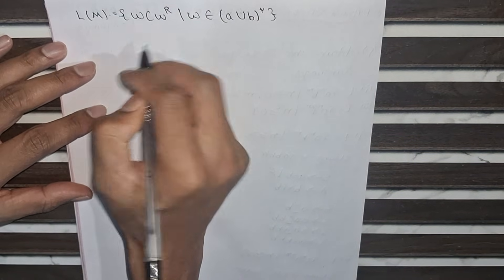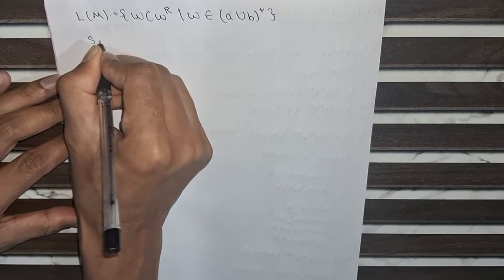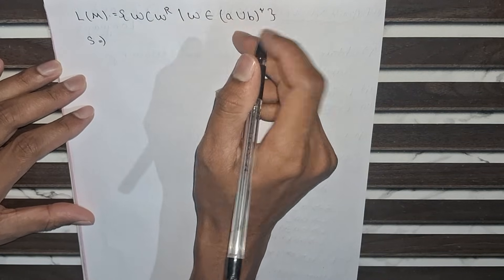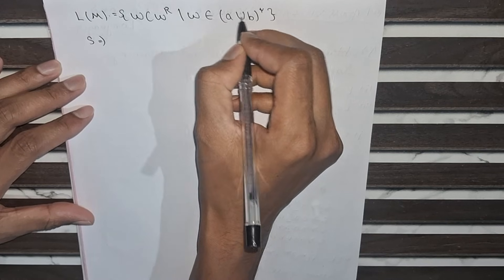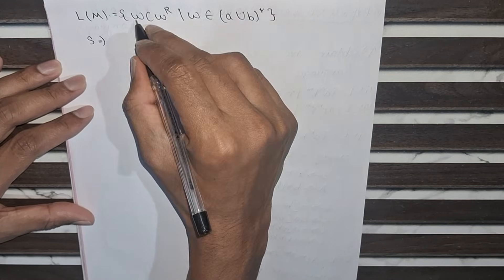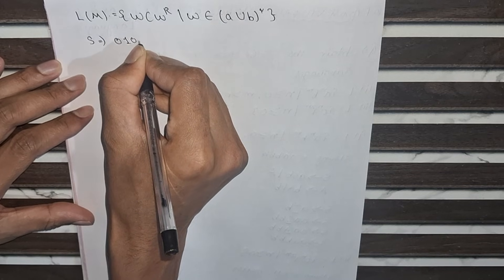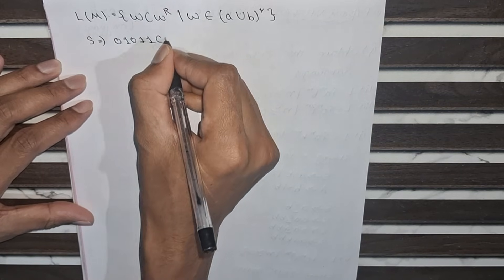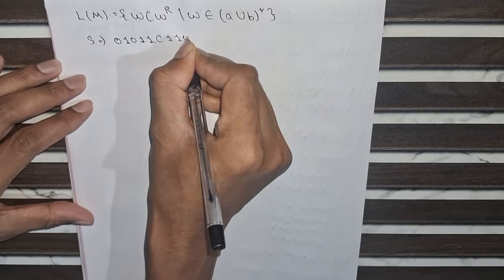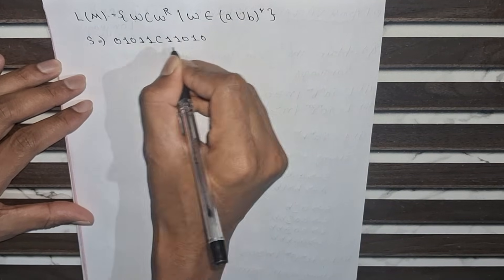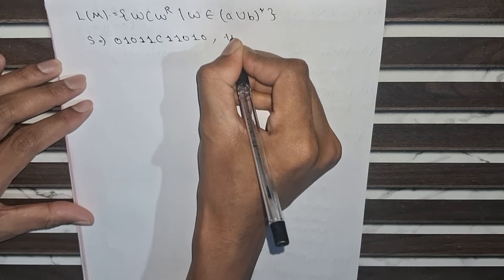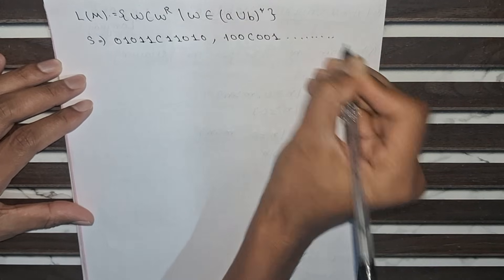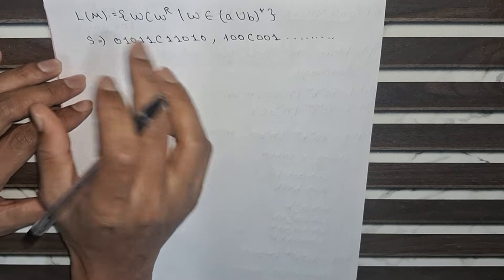This is the language for which we have to design a PDA. W belongs to (A union B) star, which means any combination of A and B is possible for W. For example, a string like A B A B B followed by C and then its reverse B B A B A would be accepted. Similarly, strings like 1 0 0 C 0 0 1 will be accepted by this language.